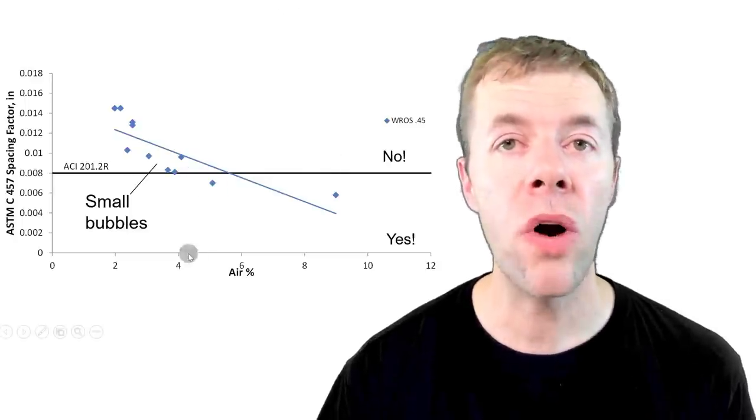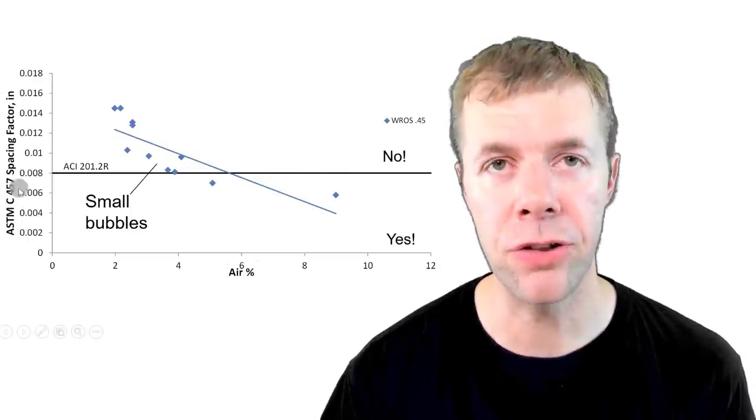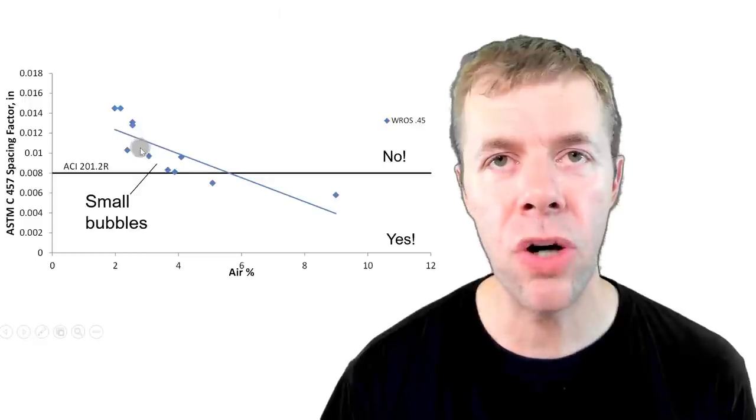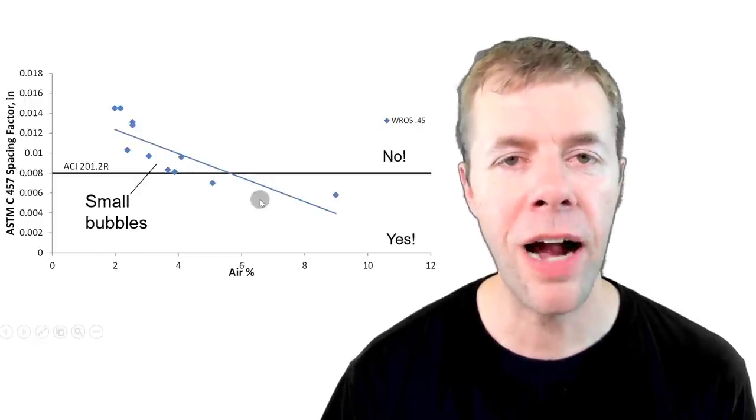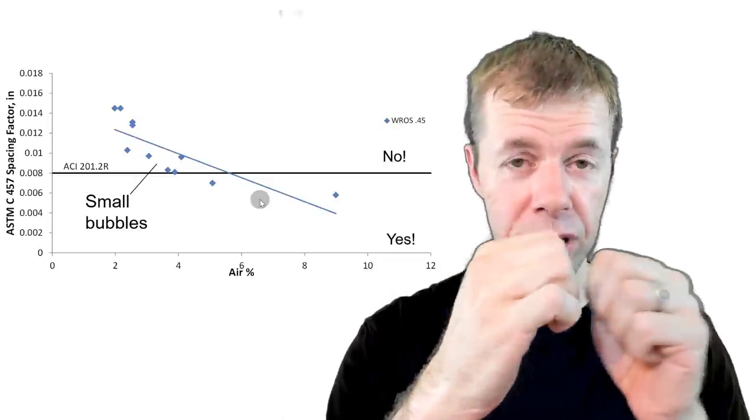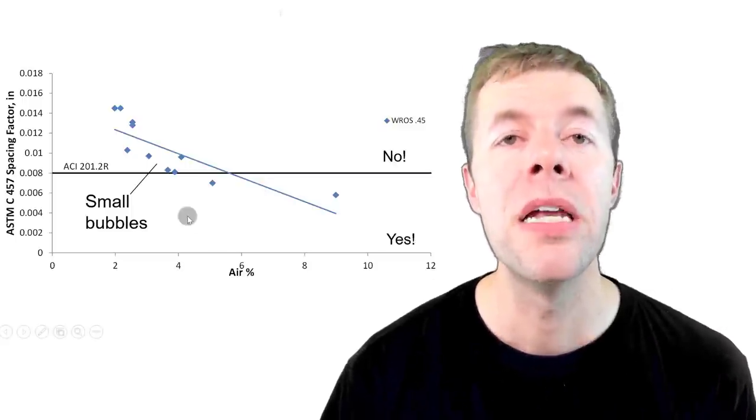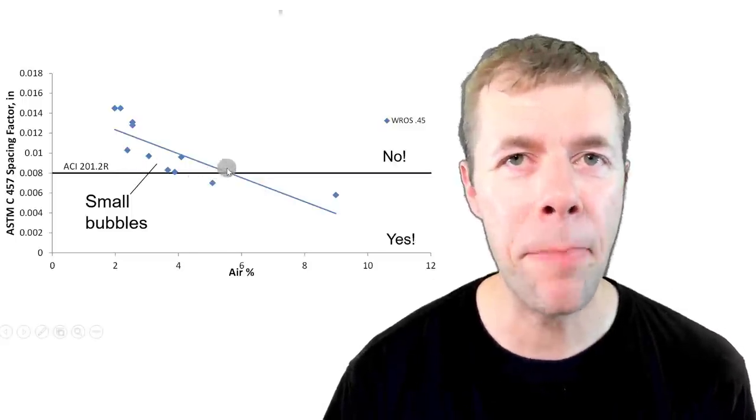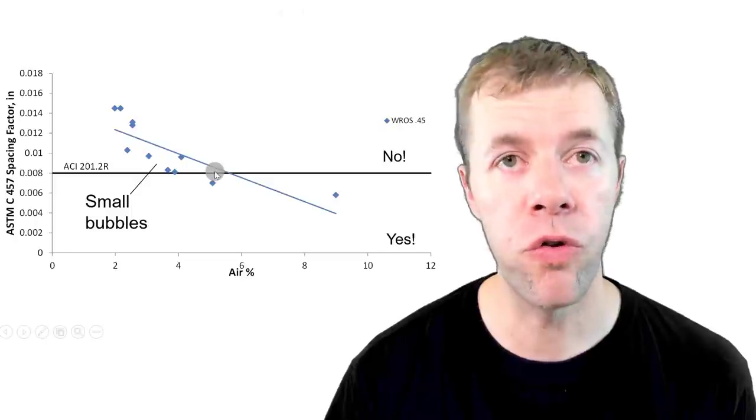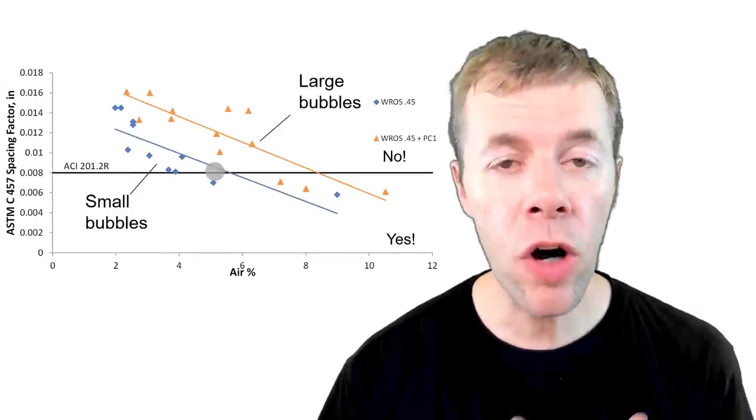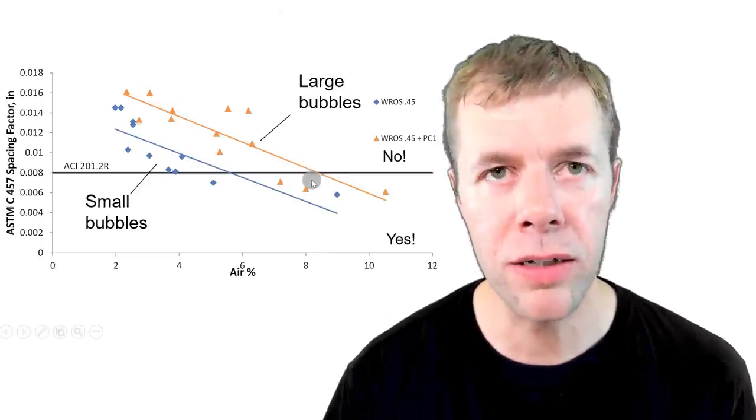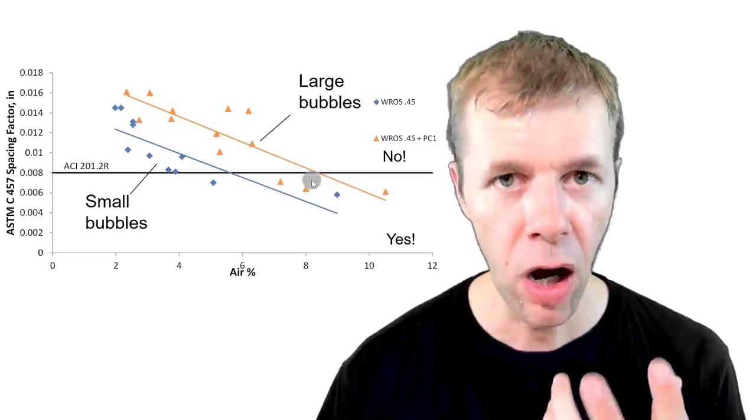Here's another way to look at this. Here's our air volume down here and here's our spacing factor, and that's our magic number of .008 inches. We can see as our air content goes up, our spacing factor goes down. As you're adding more and more air to the concrete, then the spacing of the bubbles has to get closer and closer and closer together. Now if you have small bubbles, if we get about six percent air, which is around most specifications, then you get the nice beautiful spacing factor we care about. If you have large bubbles in your concrete, then you need much much higher air content to get this magical spacing of your bubbles.